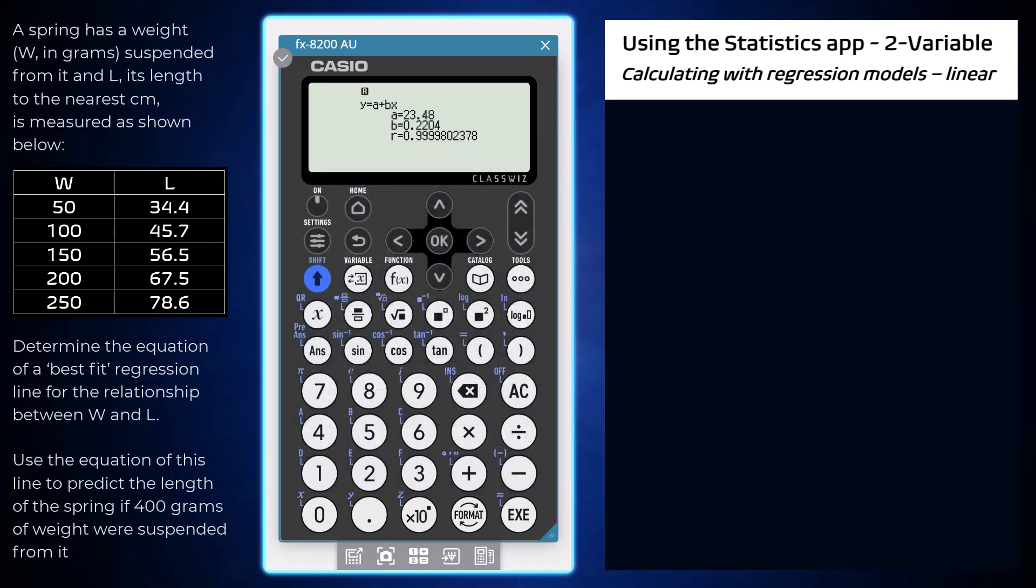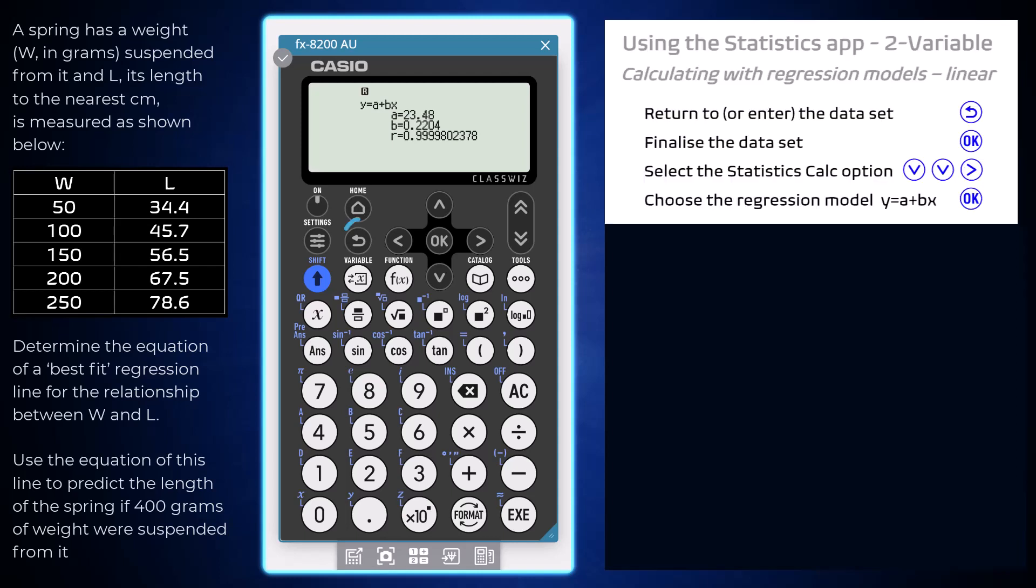Sometimes it is helpful to perform calculations using a regression model that has been generated by the statistics app of a Casio FX 8200 AU. To show how this is done, I'm going to use the back arrow to return to my already entered data set.